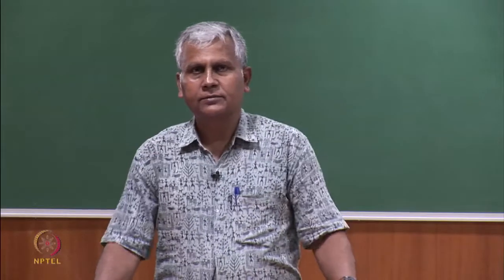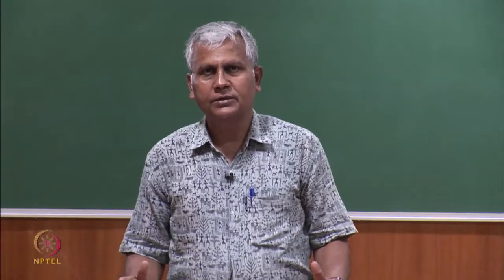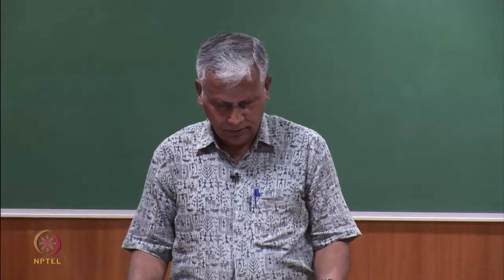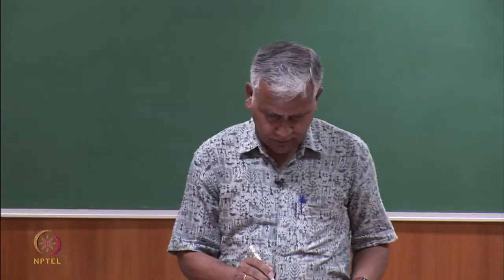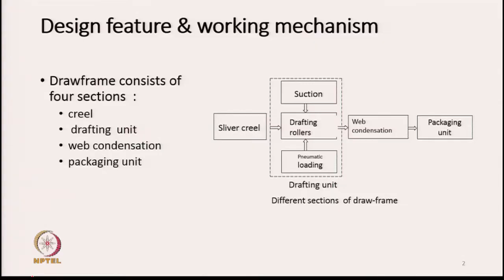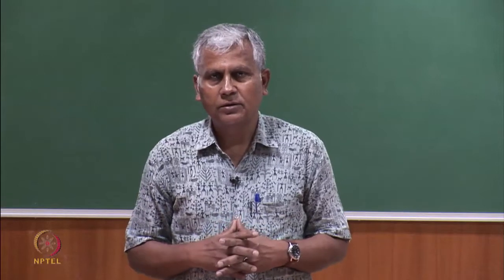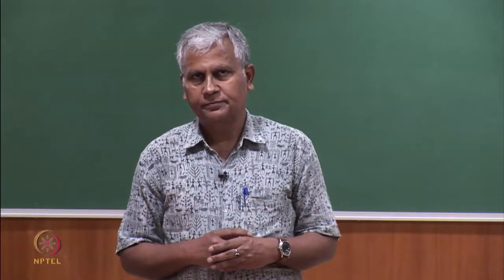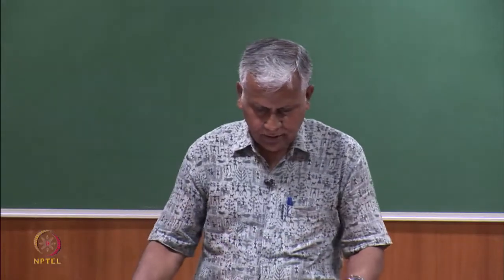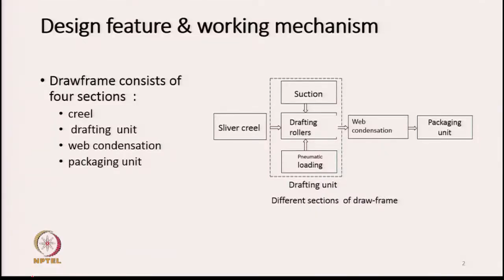Today we are going to discuss design features and the working principle of a draw frame. If we see the draw frame, the machine consists of basically four sections: the creel, the drafting unit, the wave condensation (that is drafted wave condensation), and the last unit is the packaging unit.